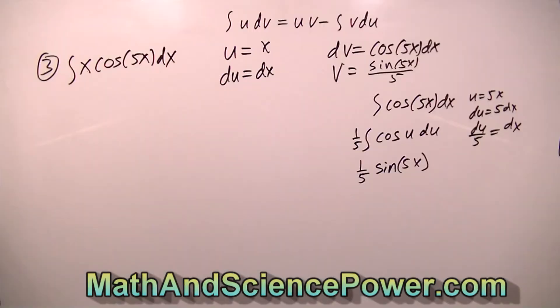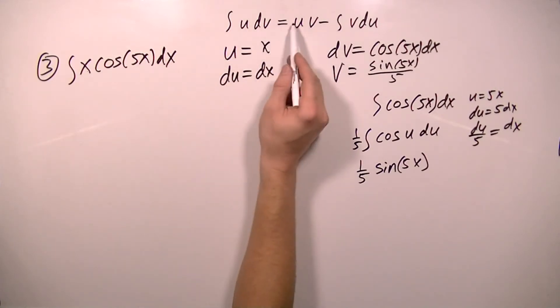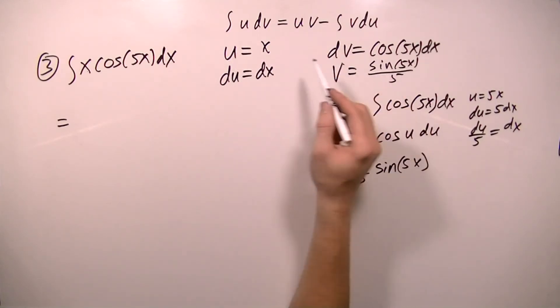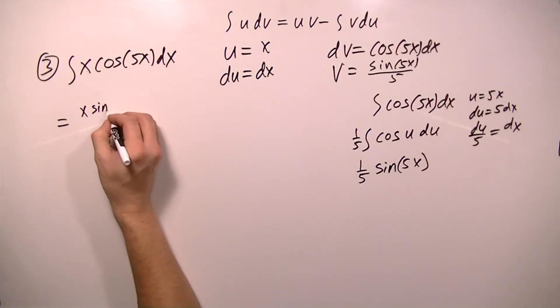Welcome back to MathAndSciencePower.com. Okay, let's plug in our values into our formula. So this integral is u and dv, and that will be equal to v times u. And when I take u times v, I get x sine 5x over 5.